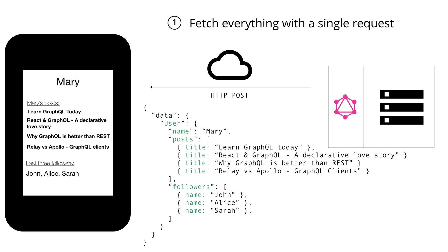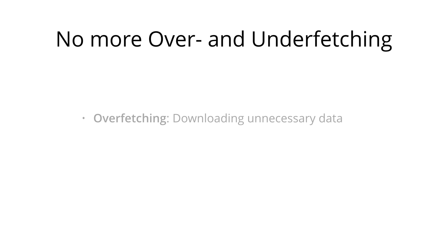Now that we have a better understanding of the technical differences between GraphQL and REST, let's discuss a couple of other high-level differences and what other benefits GraphQL has compared to REST. First, we eliminate the problem of over- and under-fetching — exactly the problems we just encountered in our example scenario. The problem of over-fetching means we're downloading unnecessary data into our application, exhausting the user's data plan with information that's not required at that particular point in time.